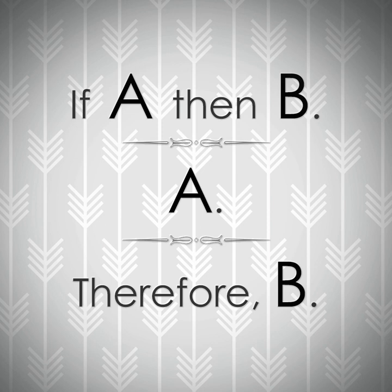Two invalid argument forms are affirming the consequent and denying the antecedent. Affirming the consequent: All dogs are animals. Coco is an animal. Therefore, Coco is a dog. Denying the antecedent: All cats are animals. Missy is not a cat. Therefore, Missy is not an animal.